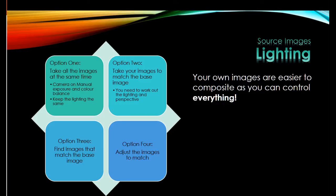The other option is to take your images to match the base image — so you find your background that you really like and then either have a copy of it with you or have a really good mental picture of it, work out where the lighting's coming from, and take your photos to match that. Option three is find images that match the base image. Option four is you can adjust those images to match — option four is probably the hardest, and we might get into that at the end.